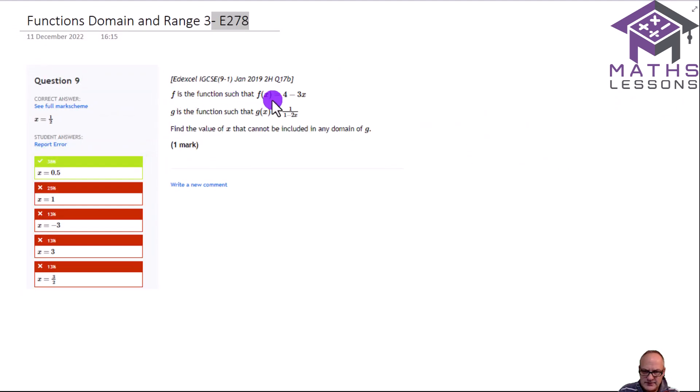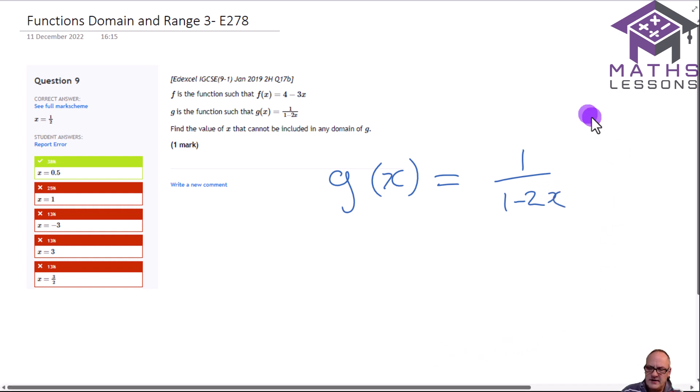Moving on to our next, we've got a function f of x is 4 minus 3x, and g of x is 1 over 1 minus 2x here. Find a value of x that cannot be included in any domain of g. So let's just write g out so it's a bit larger on your screens. So g of x equals 1 over 1 minus 2x. At this point maybe you want to pause and try and work out what value of x cannot be included in any domain of g.